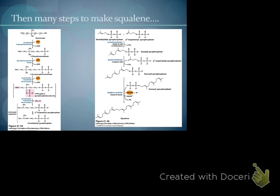From mevalonate, just to get to squalene, there are many, many steps. Some of these you could figure out based on the types of enzyme names. But once again, I don't expect you to memorize these. I do want to point out that we have the geraniol group — geraniol is 10 carbons — and the farnesyl group, which is 15 carbons, the isoprene units. That's one reason you'll hear about farnesyl transferase inhibitors and how they've tried to use them for lipid control, though FTIs haven't been the best so far.